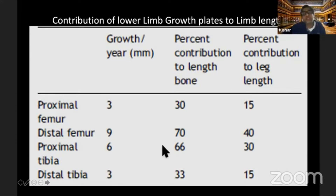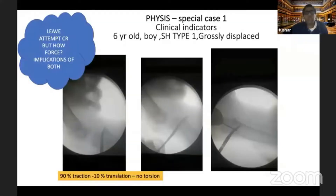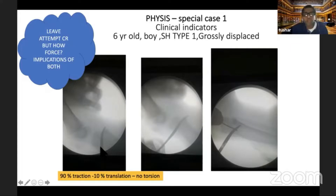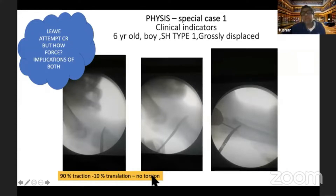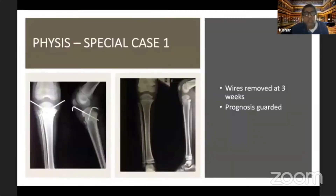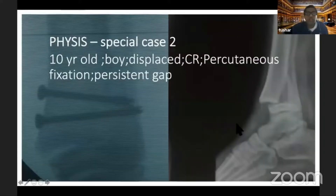Special case 1: a very grossly displaced upper tibial physeal injury, a type 2 bordering type 1. A lot of force was executed, almost like an intrafocal reduction. Could we have left it alone? Could we have applied the 90% traction, 10% translation, no torsion rule? These are difficult injuries. Today I would probably attempt a gentle close reduction and leave the child alone. Cross K-wires were placed, also trans-physeal, and on shorter follow-up the patient looked good — but we do not know the longer-term outcome.